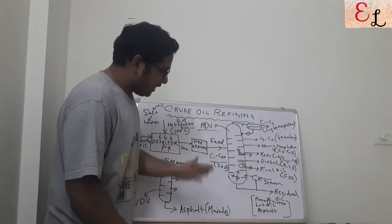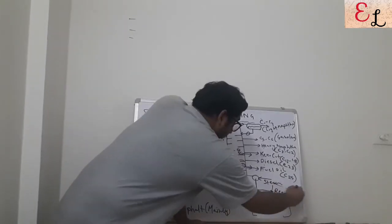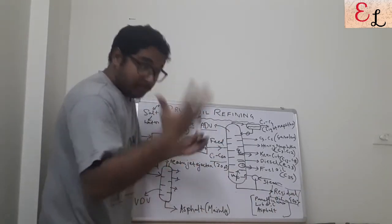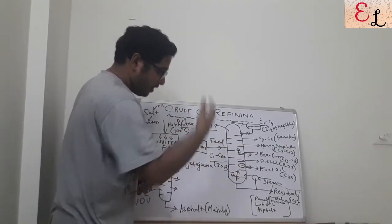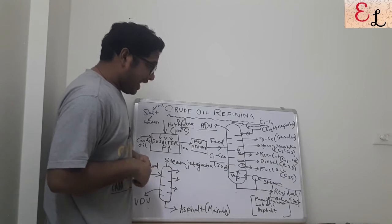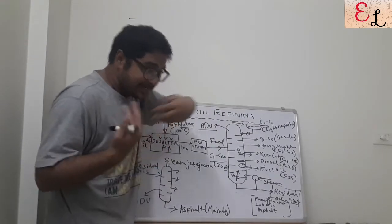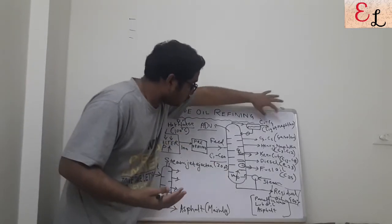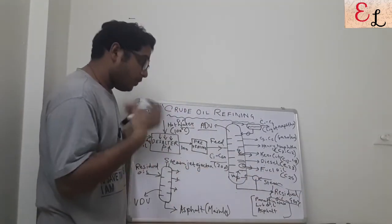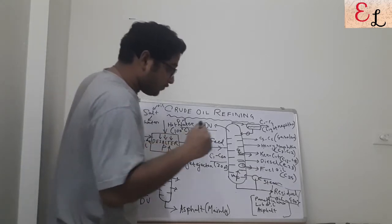Below the fuel oil cut, C28, C29, C30 up to C60 is collected as residue oil, because these components have boiling points greater than 400°C. They do not form vapor in the ADU, steam cannot strip them out due to their very high boiling points, and they remain as liquid at the bottom. Since C1 to C4 has the lowest boiling point, it most readily becomes gas, while C25 to C60 remains liquid and cannot be further separated in the ADU.